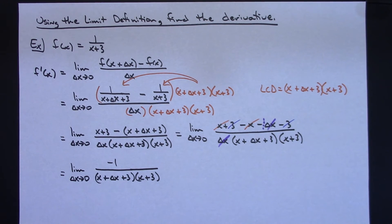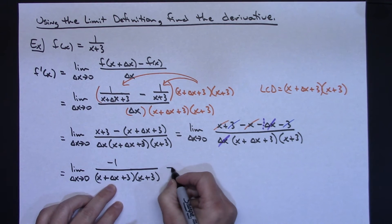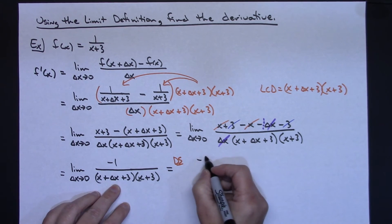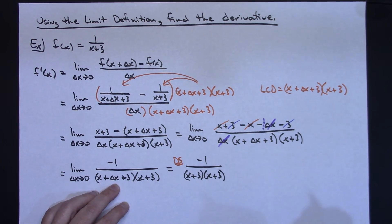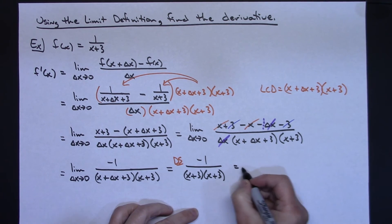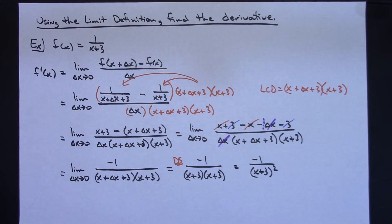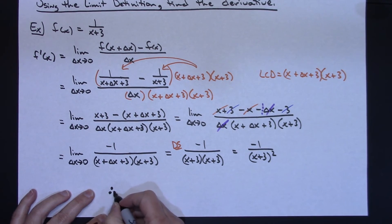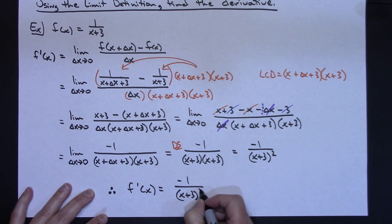Now I've simplified enough to do direct substitution — replace delta x with 0. The limit notation goes away, and I get negative 1 over x plus 3 times x plus 3. Simplifying further, that's negative 1 over x plus 3 quantity squared. Therefore, f prime of x equals negative 1 over x plus 3, quantity squared.